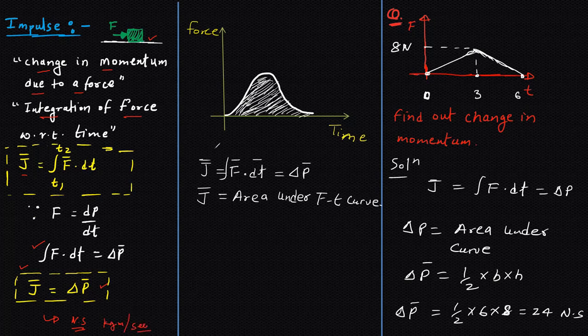Now, can we calculate this impulse from the graph? Yes, we can calculate this impulse from the graph. How can we calculate? By force over time graph, we can calculate the impulse. We know that J impulse equals integration of F dt. F dt is the integration and what is integration? Area under the curve.